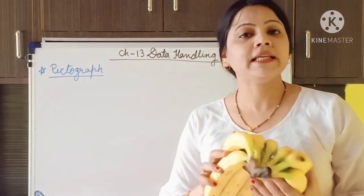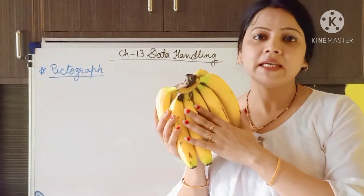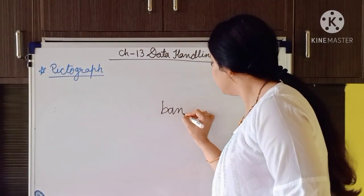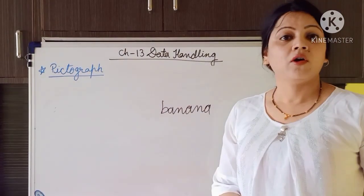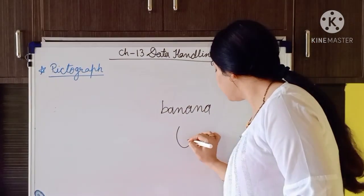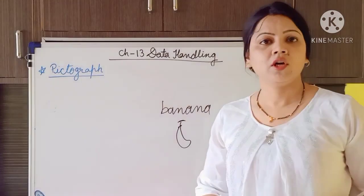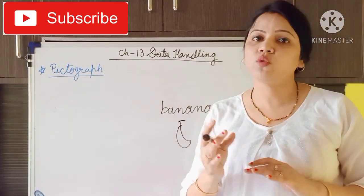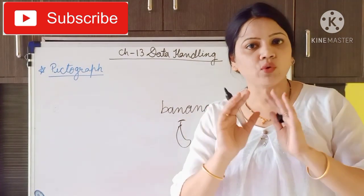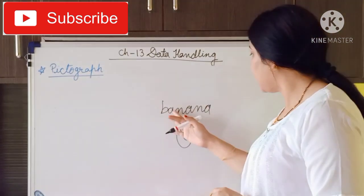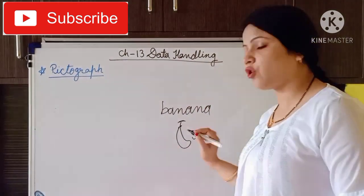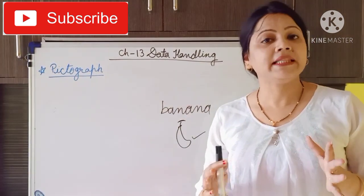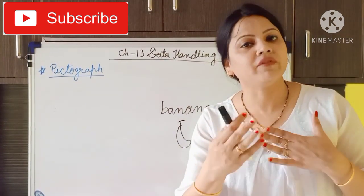If I show you this, then you can easily identify that image as showing us a banana. Else I can write 'banana', or I can also draw that banana, or I can speak 'banana'. So here I have used 4 different ways: I have shown you the banana, written the banana, drawn the banana, and spoken the word banana. By these different ways, I have shared the information 'banana' with you.